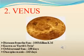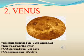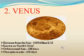Next is Venus. Venus is considered Earth's twin because its size and shape are very much similar to that of the Earth. Its distance from the Sun is 108 million km. One orbit around the Sun takes 255 days. One spin on axis takes 243 days.